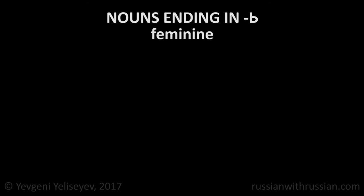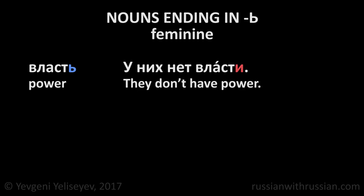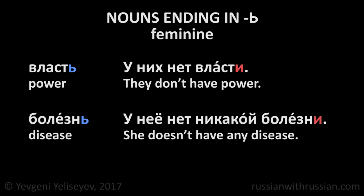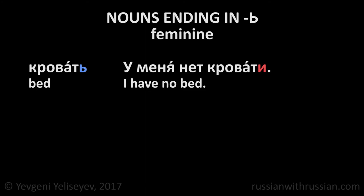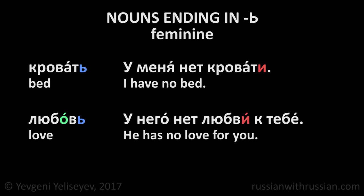Feminine gender nouns: Власть — power. У них нет власти. They don't have power. Болезнь — disease. У неё нет никакой болезни. She doesn't have any disease. Кровать — bed. У меня нет кровати. I have no bed. Любовь — love. У него нет любви к тебе. He has no love for you. This one loses a vowel and changes the stress: Любовь → Любви.